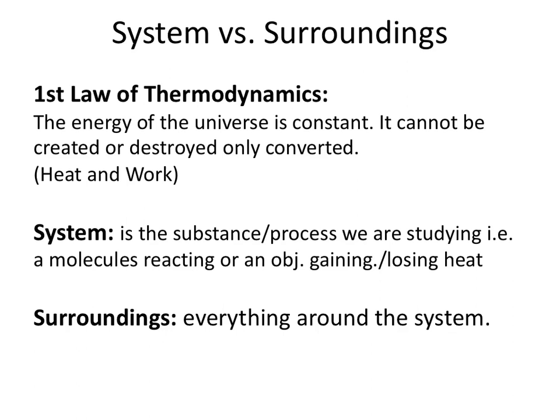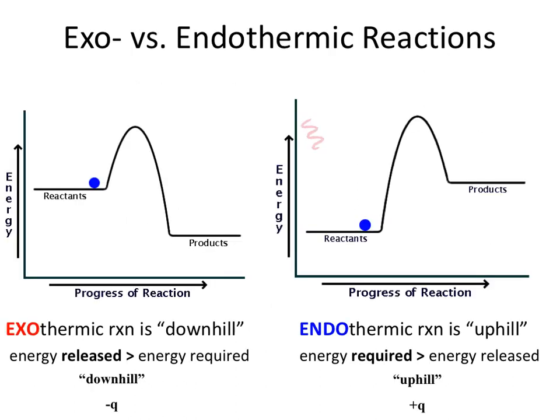Now that we understand our system and surroundings and the transfer of energy, let's look at reaction progression diagrams and how they relate to that exchange of energy. On the y-axis we have energy, on the x-axis we have the progress of reaction. We have a line representing reactants and a line representing products. In this first diagram, the reactants have a higher energy value than the products.